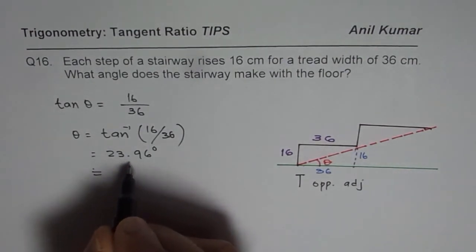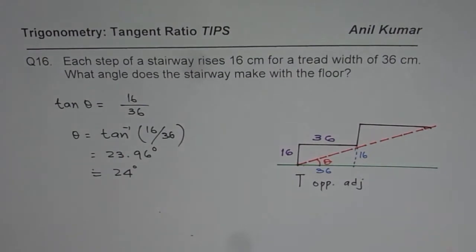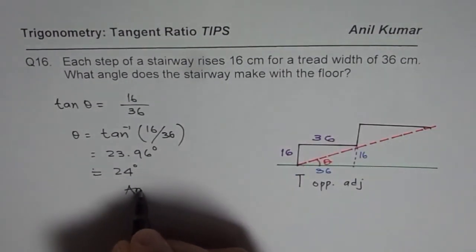When rounded to whole numbers, we get 24 degrees. So angle theta in this case is 24 degrees. So what angle does the staircase make with the floor? The answer is 24 degrees.